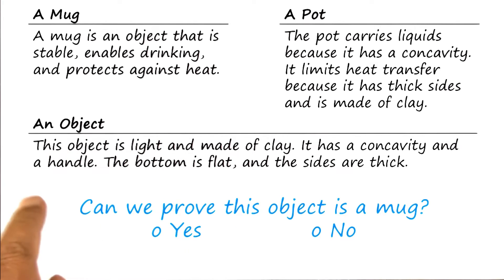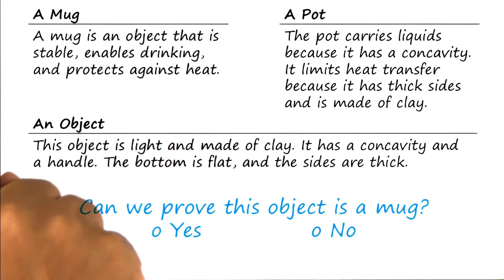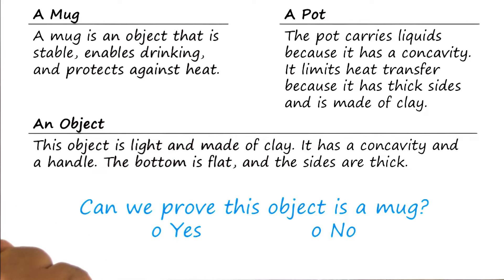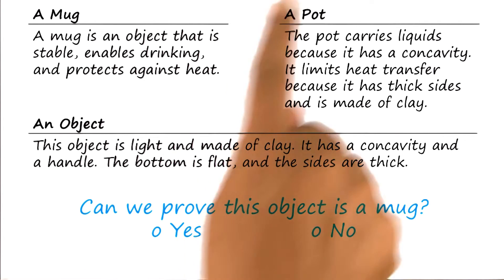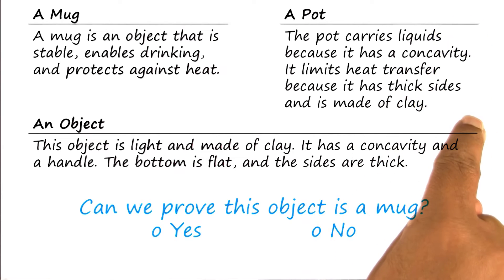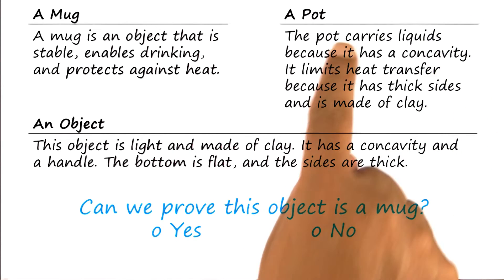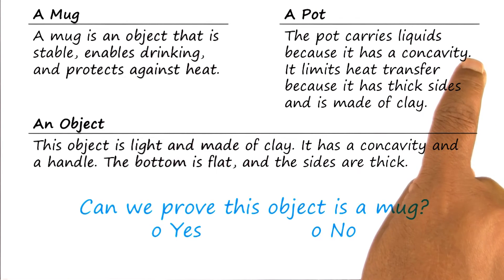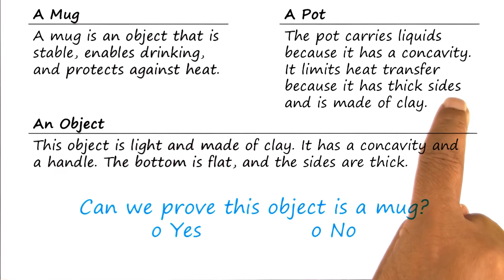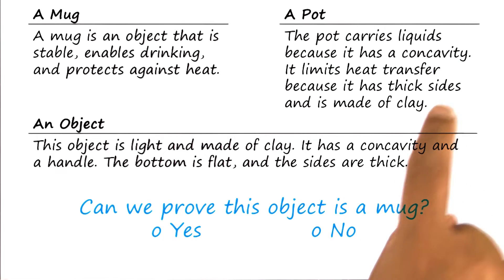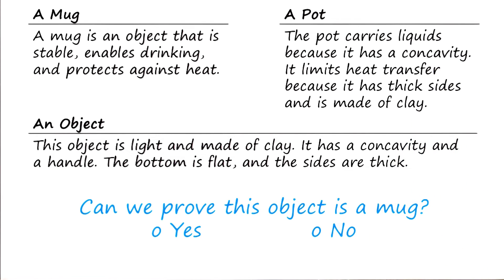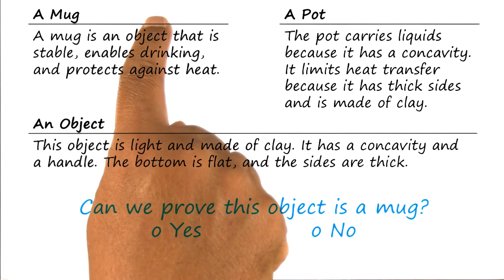You can assume that the agent knows about all four examples as earlier: the glass, the bowl, the brick, and the briefcase. In addition, in this particular case, the agent also knows about yet another example — a pot. The pot carries liquid because it is concave. It limits heat transfer because it has thick sides and is made of clay. Your task is to build an explanation that shows that this object is an instance of a mug.